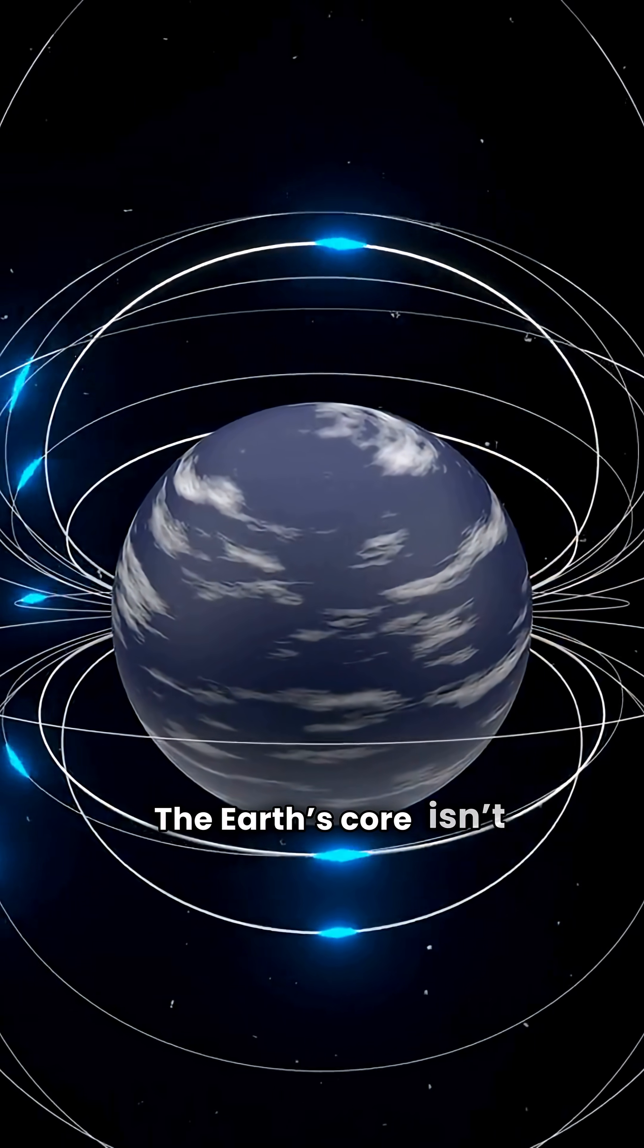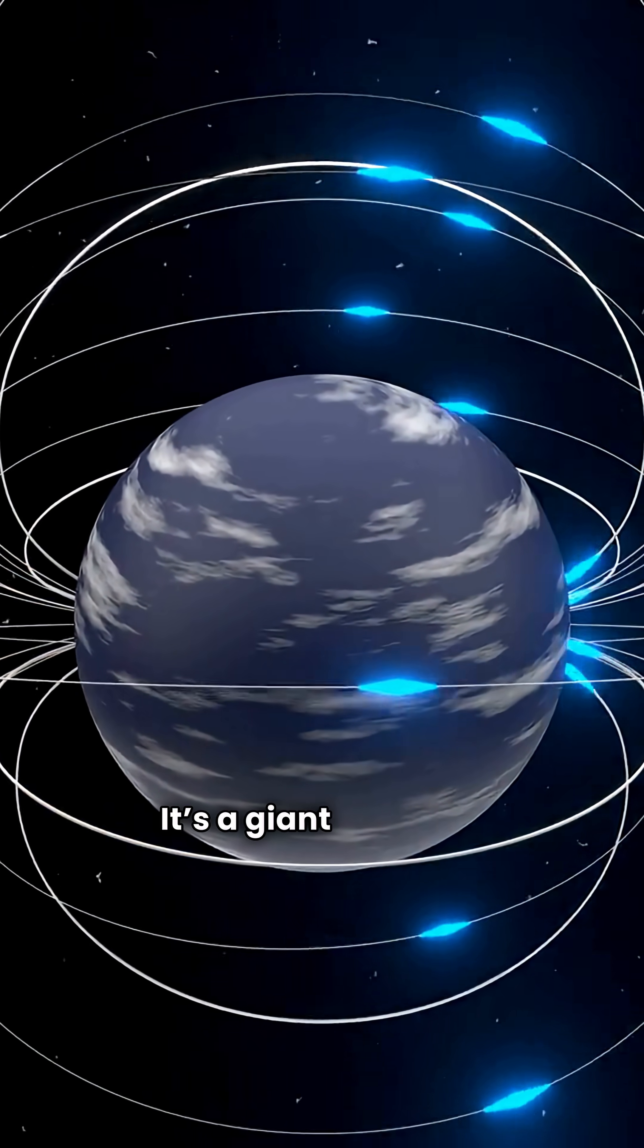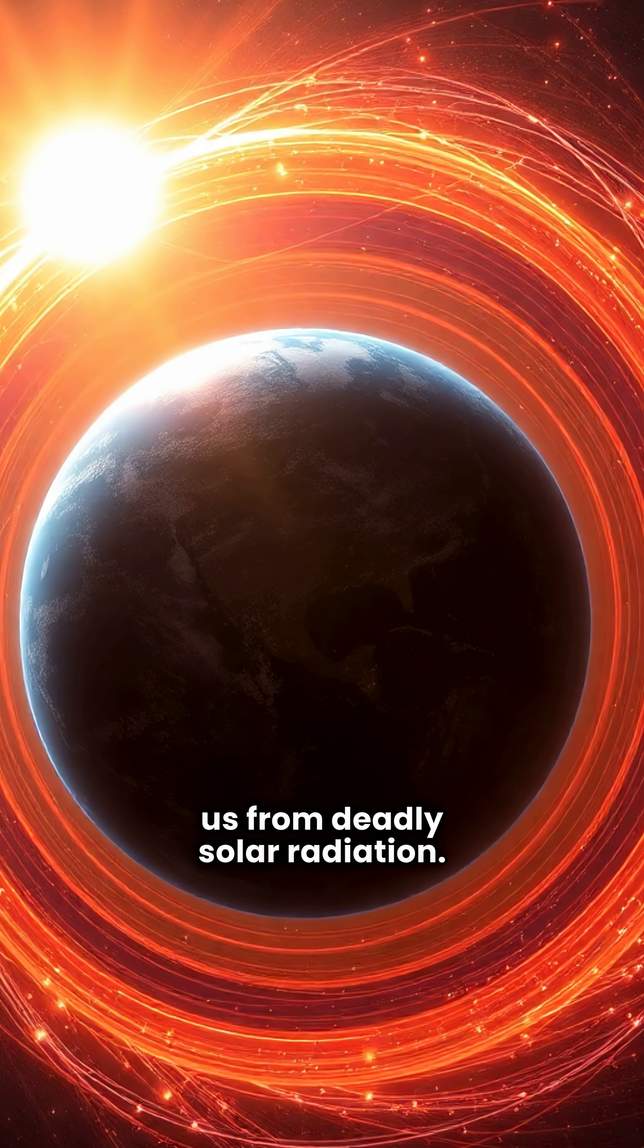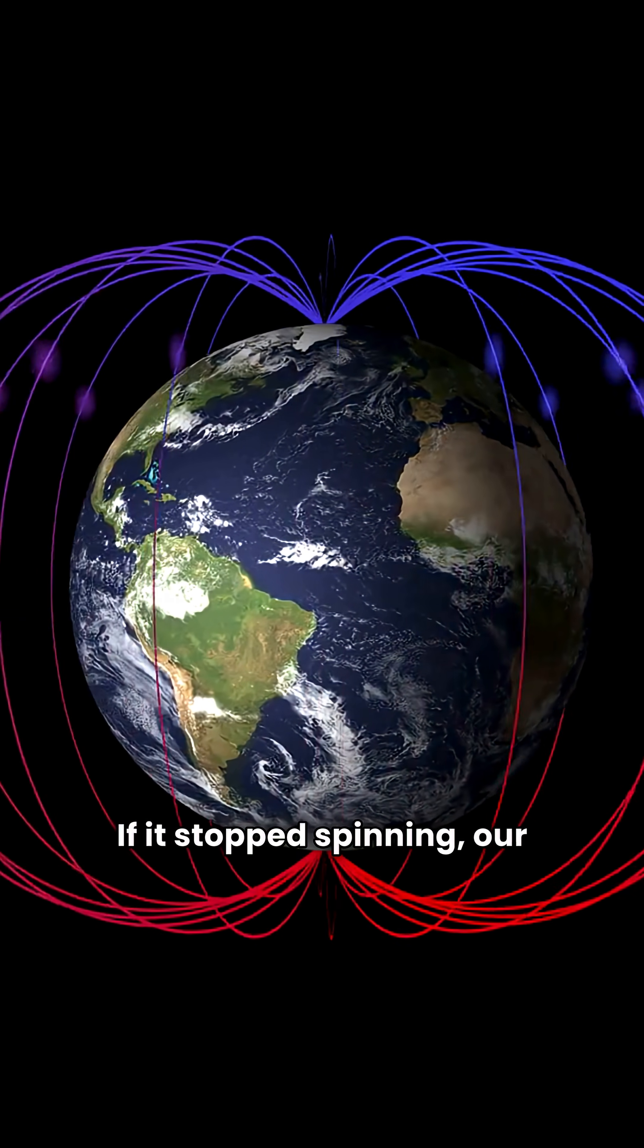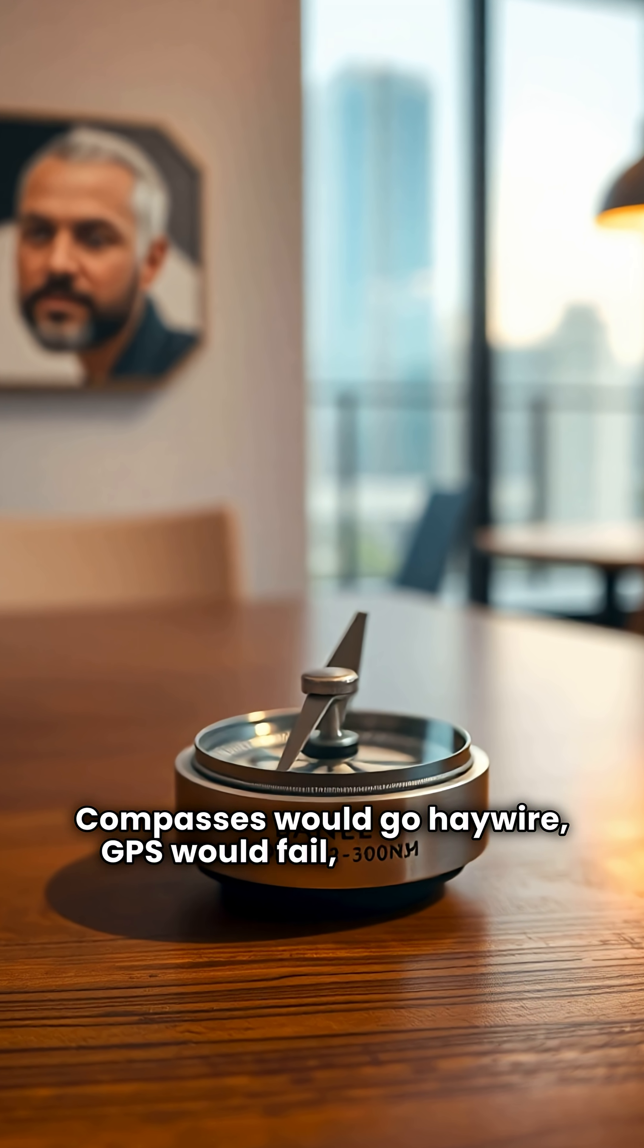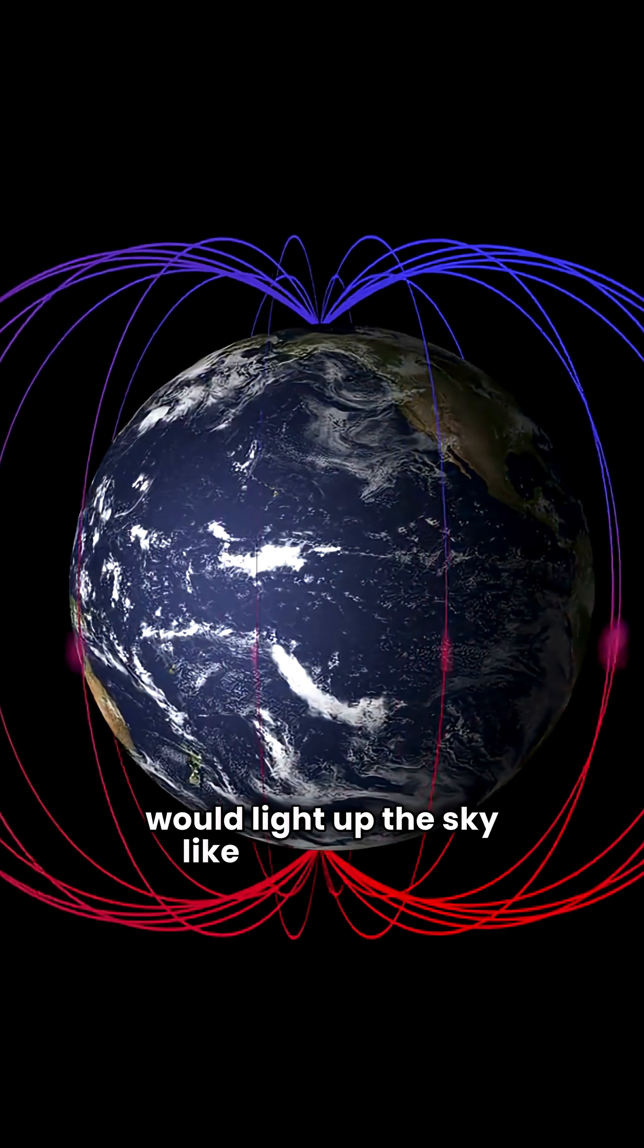The Earth's core isn't just a lump of hot metal. It's a giant dynamo spinning endlessly, creating the magnetic shield that protects us from deadly solar radiation. If it stopped spinning, our magnetic field would collapse, compasses would go haywire, GPS would fail, and auroras would light up the sky like never before.